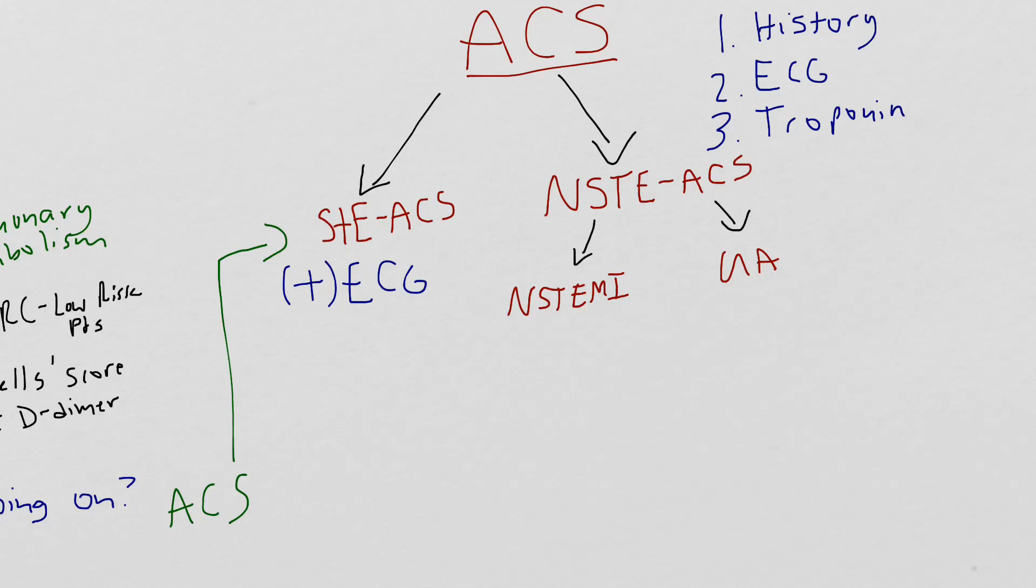The diagnosis of NSTEMI requires two things. You have a negative EKG, meaning anything but ST elevations on the EKG. You can have a normal EKG, T wave inversions, or ST depressions, each of which is more concerning than the previous. But you can't have any ST elevations because if you have ST elevations, it basically means you have ST elevation ACS. The second item you need is a positive troponin, typically greater than 0.3.